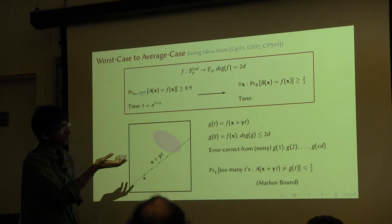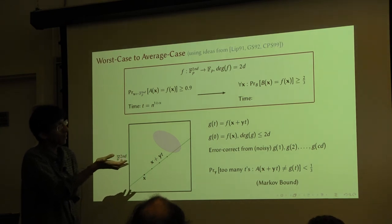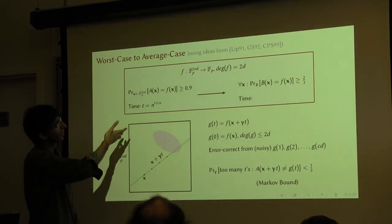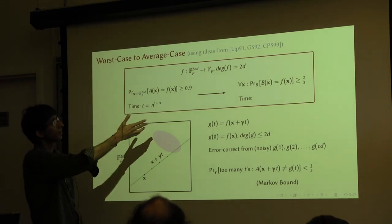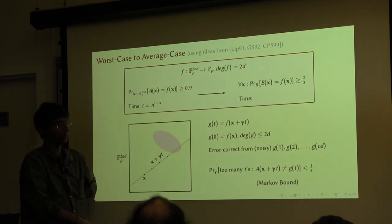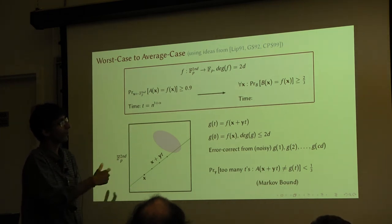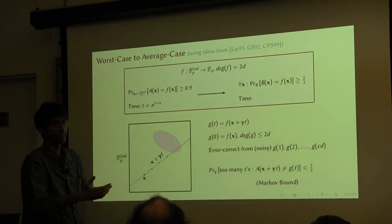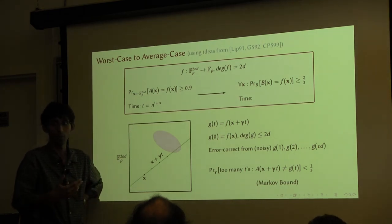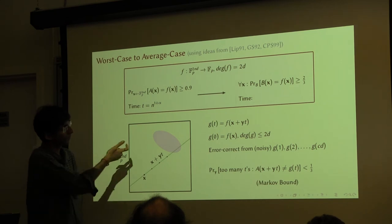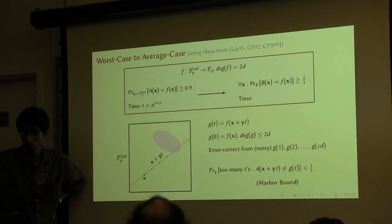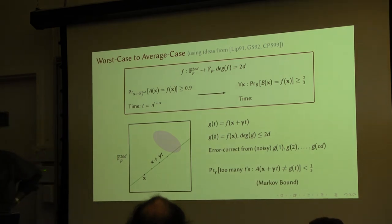So what have we done so far? It already gives us a non-trivial worst-case to average-case reduction. And if you want to go further, you need to exploit certain properties that our polynomial has that not all polynomials have.